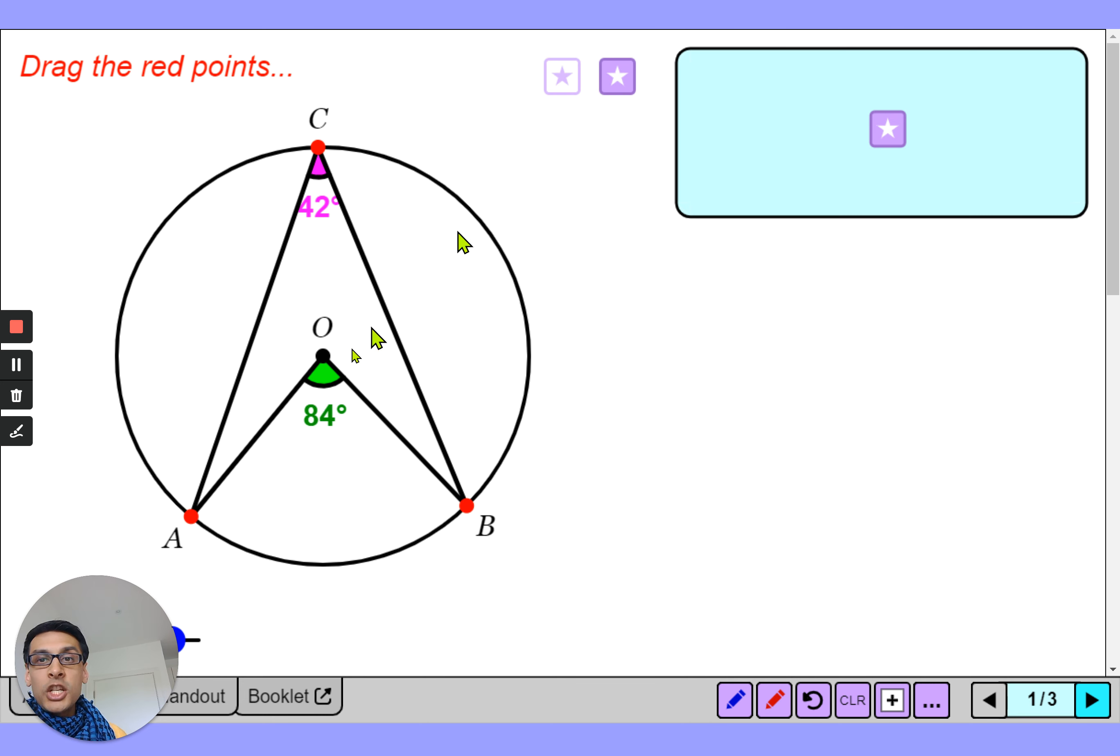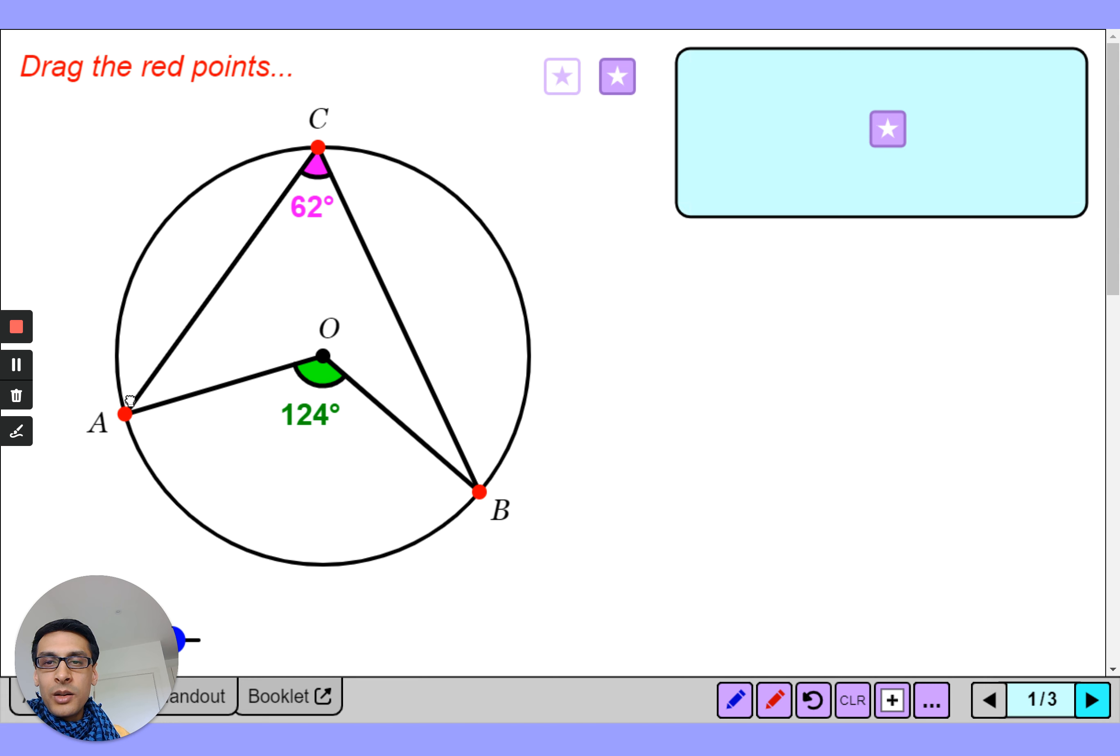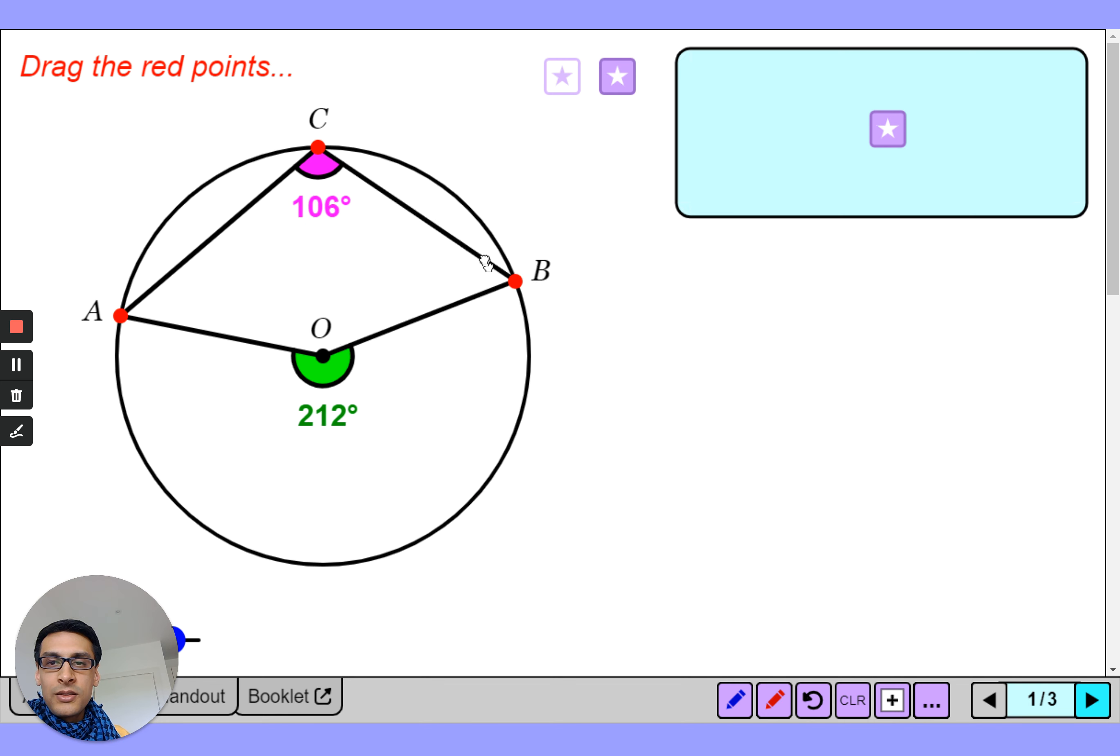Now if I show you the angles you may spot a pattern or you might already know the pattern. What do you realize is the relationship between the green angle and the pink angle here? So for example if I just change it here, what do you notice about the numbers? If I put it here, what happens if I move this all the way up to for example 250.